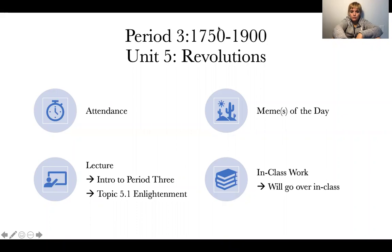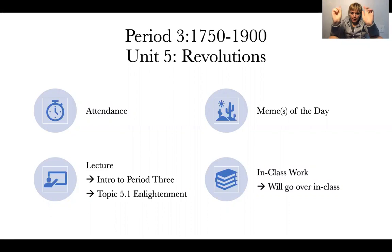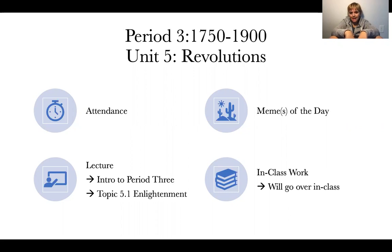Today is our first class for Period 3. What you might notice is that Period 3 is actually the shortest time frame we've looked at. Period 1 was 1200 to 1450 — that's 250 years. Period 2 was 1450 to 1750 — 300 years. Period 3 is 1750 to 1900, only 150 years. So you'd think it might be shorter, but you'd be wrong.